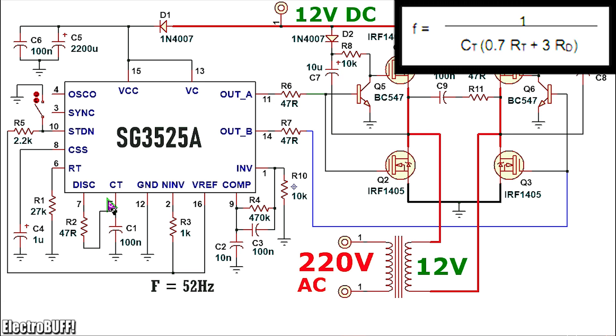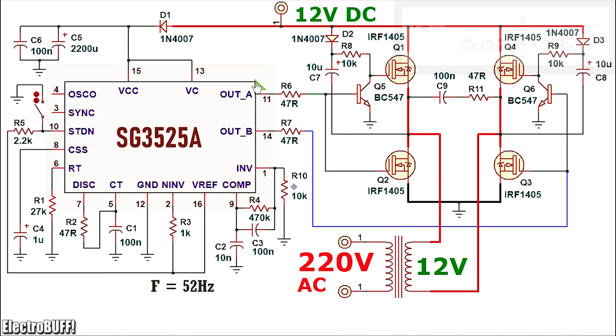The frequency is set by the capacitor C1 and the resistors R2 and R1. The frequency is given by 1 over C1 into 0.7 R1 plus 3 R2 and if you put this together you should get a frequency of about 52Hz which is okay. To enable the outputs at pin 11 and 14 you need to pull down the shutdown pin 10 to ground via a simple switch. This can be a simple ON-OFF switch because otherwise it will be pulled up to 5V generated by the reference pin 16 and the outputs at pin 11 and 14 will be disabled.